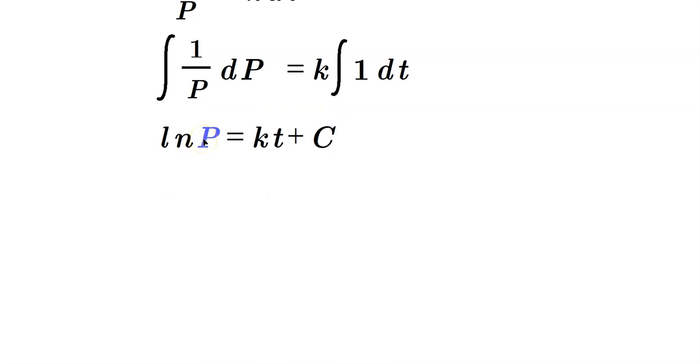We've got to get P by itself. We're solving for P, that's our objective. So you can do that by exponentiating both sides. In other words, write e raised to the ln P is equal to e raised to the kt plus C.